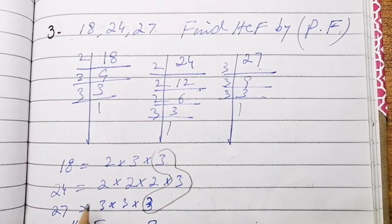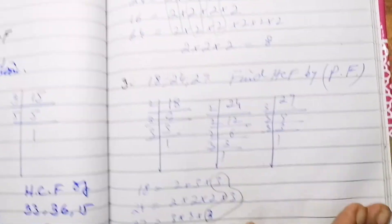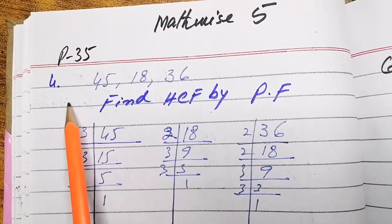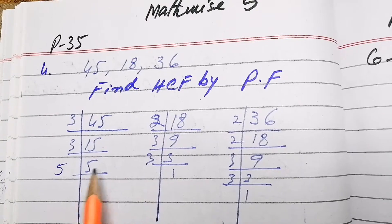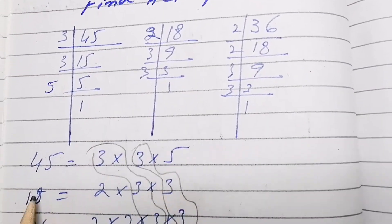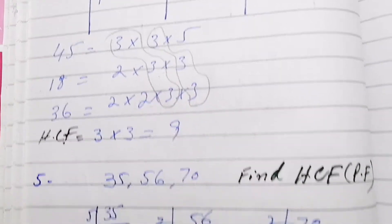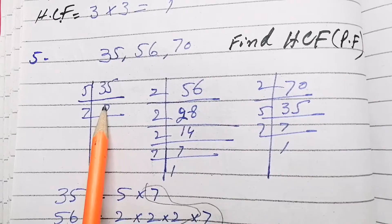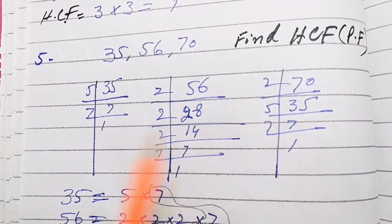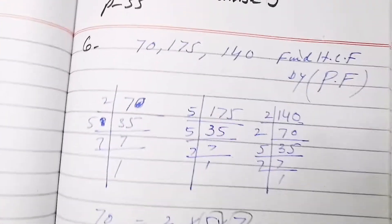For part 3, the numbers 45, 18, and 36 are given. We take the factors separately and the common factors are 3 and 3. For part 4, the numbers 35, 36, 56, and 70 are given. We take their prime factors separately, find the common factor, and 7 is the common number, so that is the HCF.